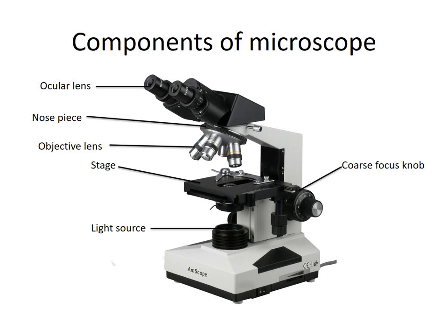To focus the image of the specimen on the slide we have two different focusing knobs. First is the coarse focus knob, which is going to change the focus drastically. For more subtle changes in focus we have the fine focus knob, which is the smaller knob. We've already discussed the base — this is where one hand goes when we move the microscope, and our other hand holds the arm.